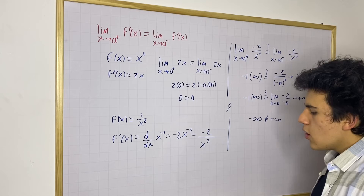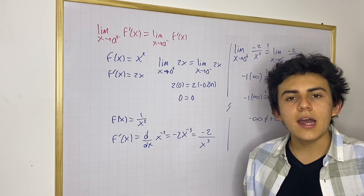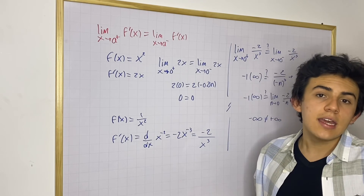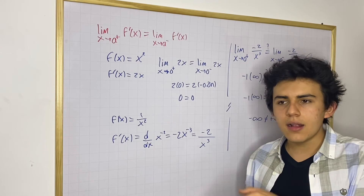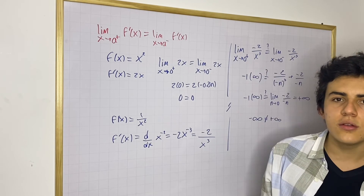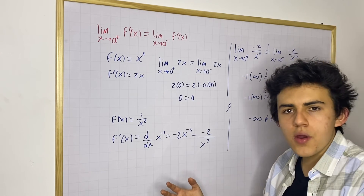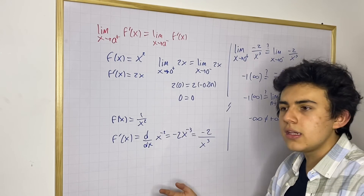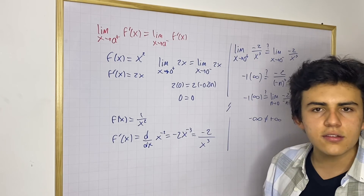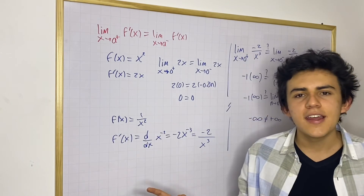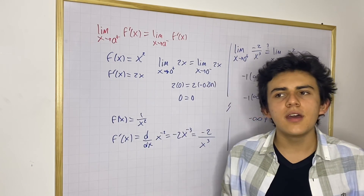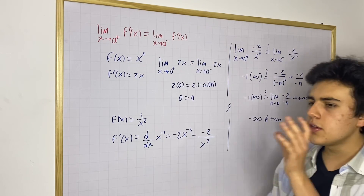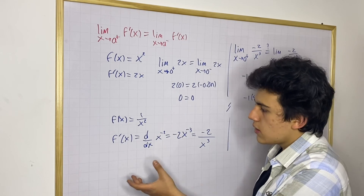This actually makes a lot of sense. Remember that if a function is continuous at a point, it might still not be differentiable there — that happens, for example, with the absolute value function at x equals 0. But if a function is differentiable at a point, then it must also be continuous there. In this case, f of x is not continuous at x equals 0 because the limit goes to infinity and doesn't exist. These are definitions we need to work with to understand how functions behave near specific values.